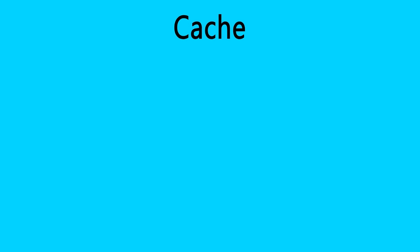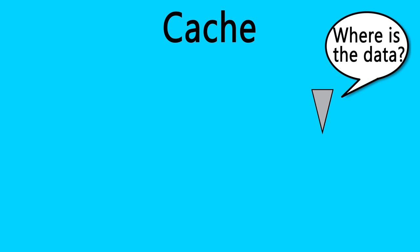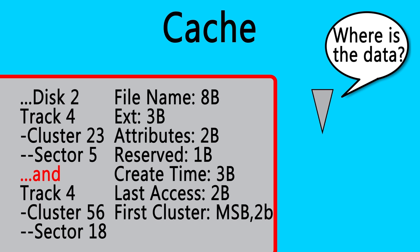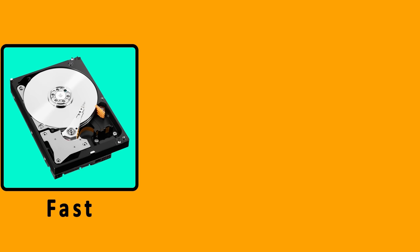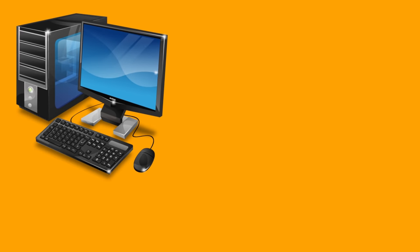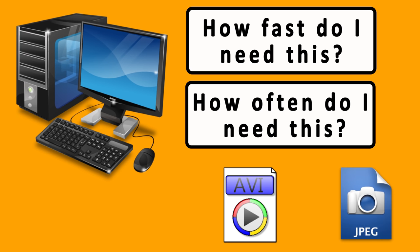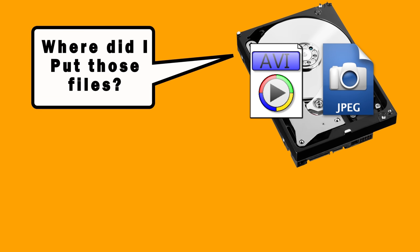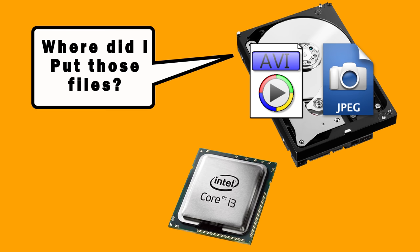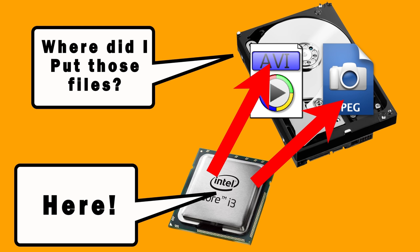Later, when you go to load that data back up, the reader head first checks the file allocation table to figure out where to go, and then goes there to find the specific piece of data and read it. The cache works very similarly to the file allocation table, but with a significantly more precise map to where that data was stored, resulting in significantly faster loading times. A cache can be stored on the hard drive itself, in your RAM, or even in the CPU. Caches are made when your computer identifies information that needs to be accessed very quickly and very frequently — such as a video file imported into a video editing program, or a photo into Photoshop.